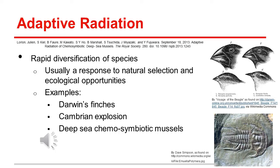Another example would be the Cambrian explosion. Prior to the Cambrian explosion, there is very little fossil record of any organisms. After, we get records of a plethora of diverse animals, such as the trilobites, depicted here, stem molluscs, conodonts, echinoderms, and more.